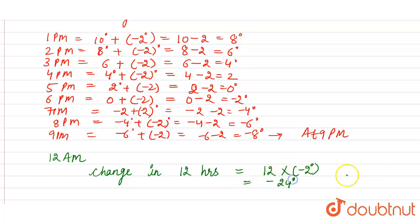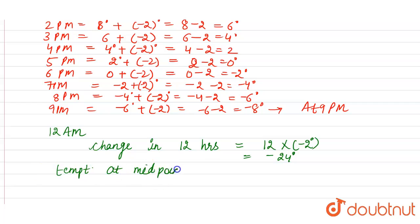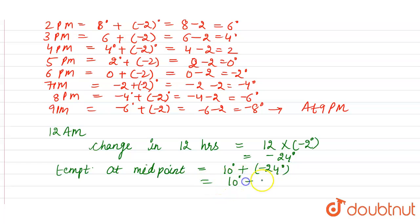We have to calculate what would be the temperature at midnight. Temperature at midnight will be equal to 10 degrees (the initial temperature) plus the change in temperature after 12 hours, which is minus 24 degrees. So this is equal to 10 minus 24 degrees, which is equal to minus 14 degrees.